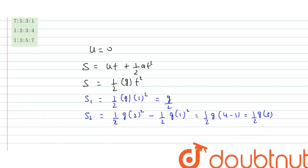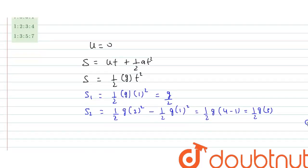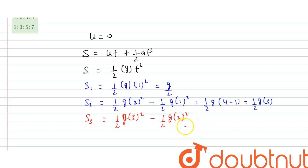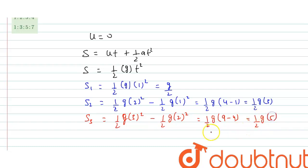Total distance travelled by the body in the 3rd second equals total distance in 3 seconds minus total distance in 2 seconds: ½g × 9 − ½g × 4 = ½g(9 − 4) = ½g × 5.